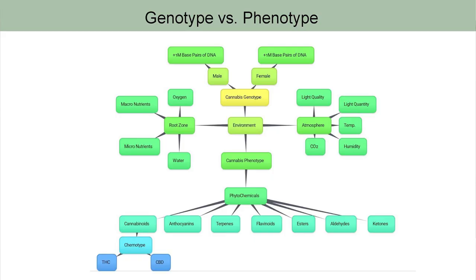From one million-plus base pairs of DNA on the male side and one million-plus base pairs of DNA on the female side, two flowers will pollinate. The female produces seeds, and that seed gives you a plant that represents your genotype — the inherited traits from both male and female. That plant grows within a particular environment. In the root zone you'll have oxygen, macronutrients, micronutrients, water, and temperature. On the above-ground side you have light quality, light quantity, temperature, humidity, CO2, and more. Those environmental factors determine how the genes express themselves — what we call phenotype.